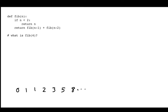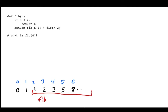These numbers are in positions 0, 1, 2, 3, 4, 5, 6. For most of these numbers, except the first two, there's a recursive pattern. The Fibonacci number of n — where n is the position — equals the Fibonacci number of n minus 1, the previous number, plus the Fibonacci of n minus 2, two numbers ago.